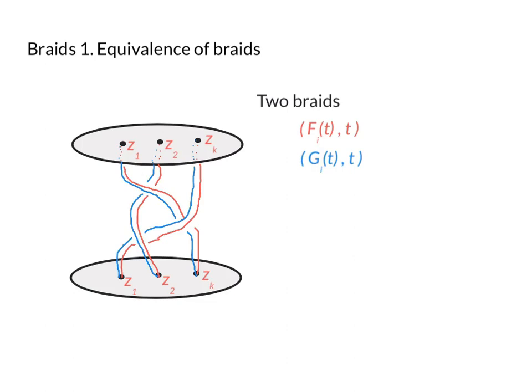So I'm going to define a notion of equivalence that makes them the same. Two braids (f_i(t), t), which is the red one, and (g_i(t), t), which is the blue one, are considered to be equivalent if there are homotopies H_i(s,t), one for each i from one up to k, such that at s equals zero we get the braid f_i(t), so H_i(0,t) is f_i(t).